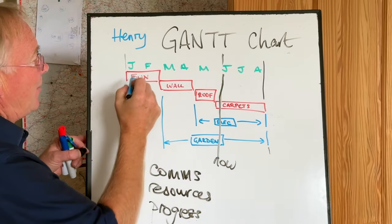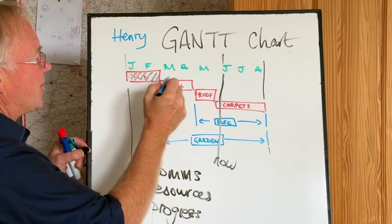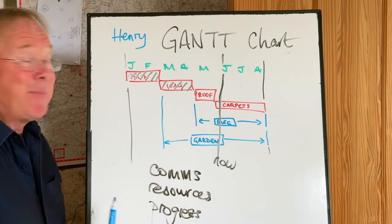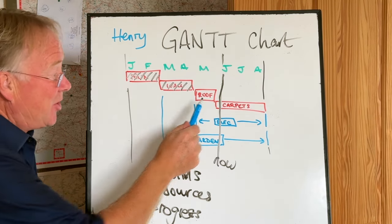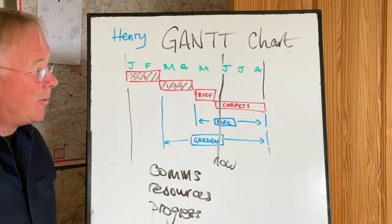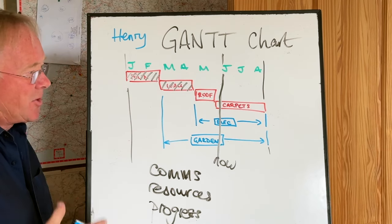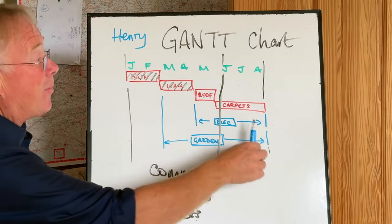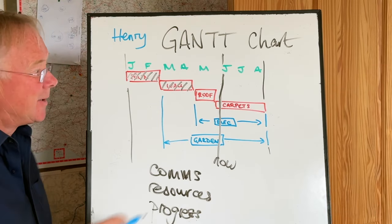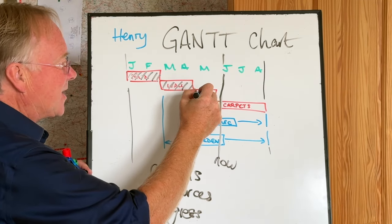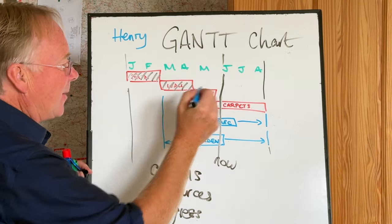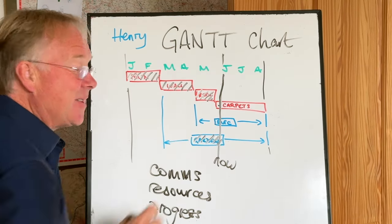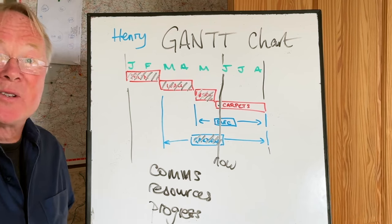In this case, we would hope that we've done the foundations and the walls. If it looked like we're not quite keeping up, it would mean we should have done the roof by the time we get to June. The project manager can immediately tell the project is running behind, and therefore we're probably not going to be ready by the end of August. What we want to see is that we've done the roof, finished the garden, and just started on the carpets and the electrical work — then we know we're on schedule.